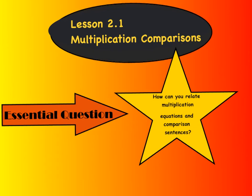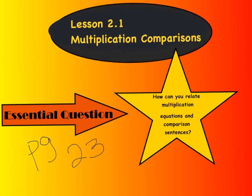Good evening, math friends. Tonight's video is Lesson 2.1, Multiplication Comparisons. I need you to make sure that you are on page 23 of your GoMath book. When you get there, at the top where it says name, you're going to write the essential question: How can you relate multiplication equations and comparison sentences? Go ahead and write this down at the top of page 23. Remember, during this video you can pause or rewind and rewatch any section to make sure that you're following along with us. Let's go ahead and get started.